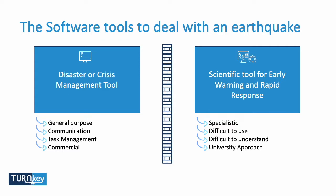On the other end, we have scientific tools — there are scientific tools for every kind of emergency. In the case of an earthquake, there are tools for early warning and rapid response. They have different features; they are specialist and difficult to use, difficult to understand, at least for a non-scientist, because the results need interpretation.